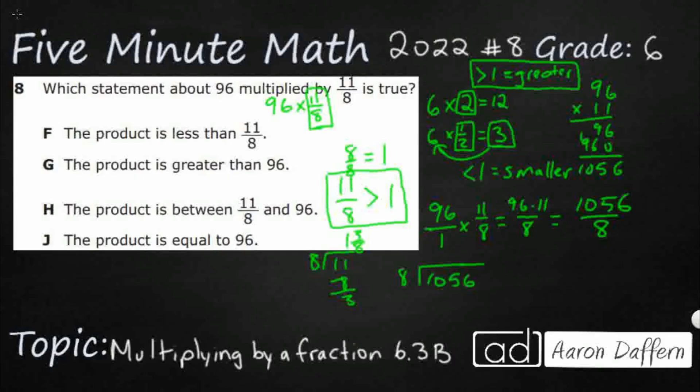8 into 1056 goes in once. 25. Just bring down one number at a time. 3 times 24. Look at that, it's going to go in evenly. 2. So 132. That equals 132. I multiplied 96 by 11-eighths and I ended up getting 132.